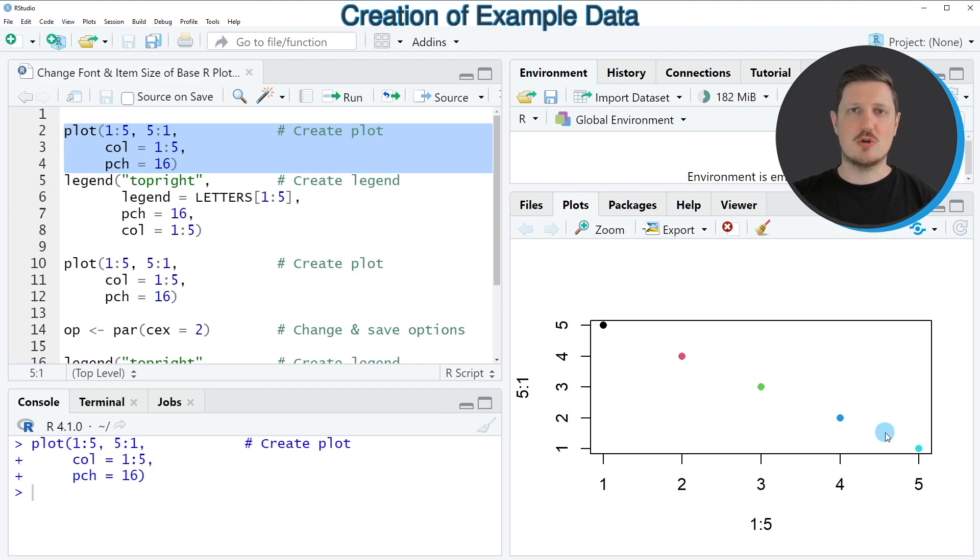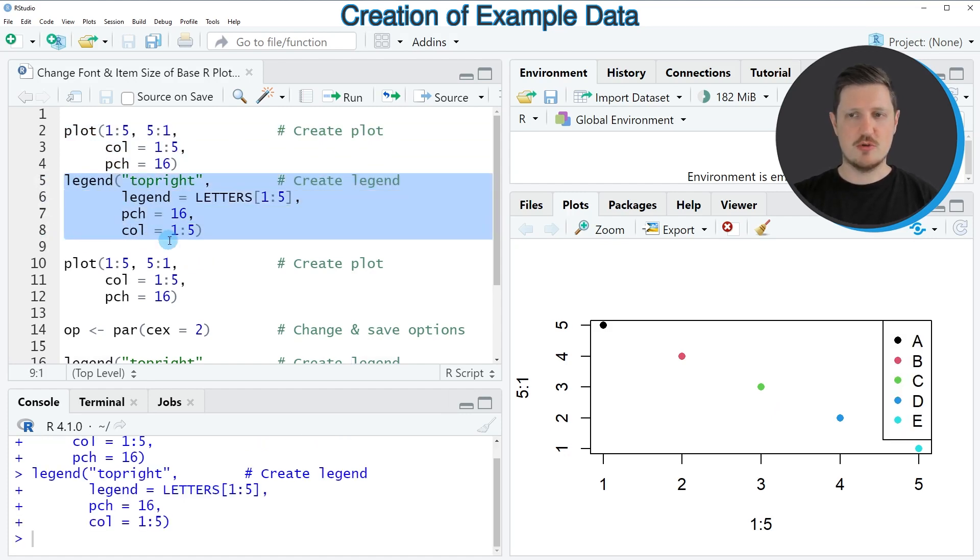Now if you want to draw a legend to this plot, we can apply the legend function as you can see in lines five to eight of the code. So if you run these lines of code, you can see that a legend is appearing at the top right of our plot, and this legend shows our five different colors and the labels that correspond to these colors.